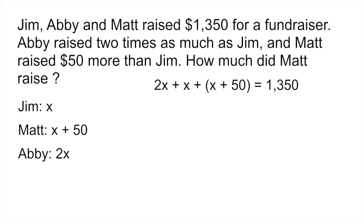And then it says that Abby raised two times as much as Jim. So Abby raised 2x. And together these three people raised $1,350. So you would set up your equation like this. 2x, which represents Abby, plus x, which represents how much Jim earned, plus x + 50, which represents Matt, is equal to $1,350, which is the total.